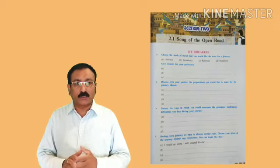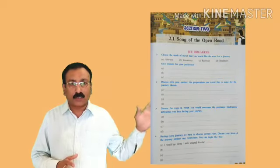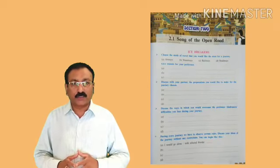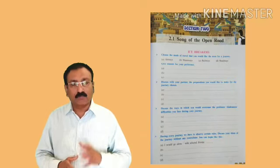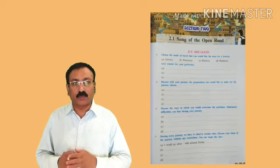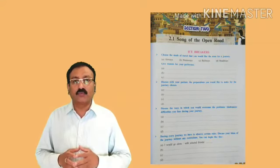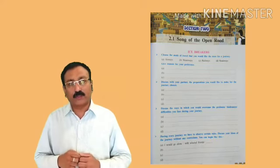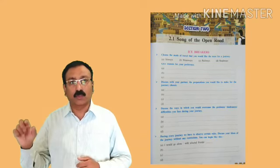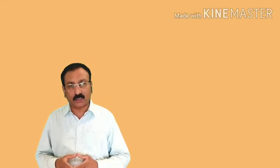Let us see the first page of the second section of our textbook, that is Poetry. The title of the first poem is Song of Open Road. Before the actual poem, some activities are given in the Icebreaker section. First of all, we are going to solve all these activities and then we will move to the actual poem, Song of Open Road. Let us see the first activity in the Icebreaker section.